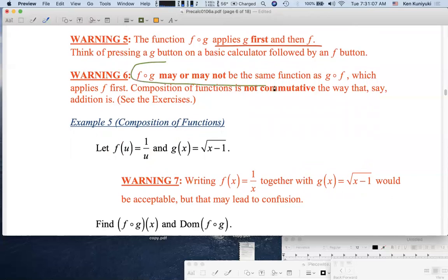Now order might matter. f circle g may or may not be the same function as g circle f. Composition is not a commutative operation. For example, think about reflections and translations back in Section 1.4. In the exercises you'll do some examples.